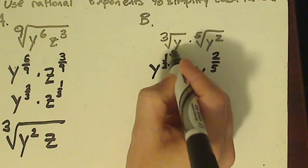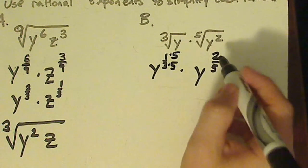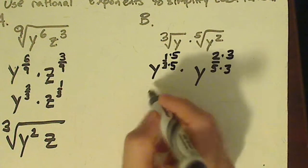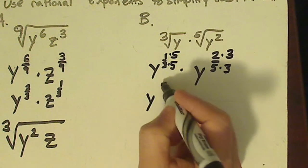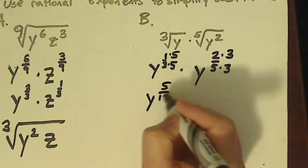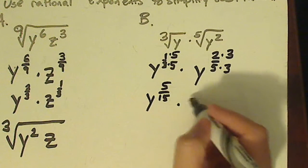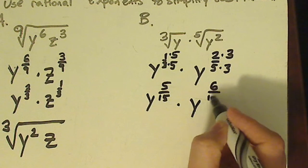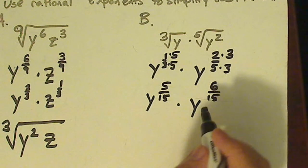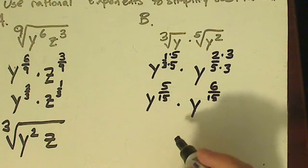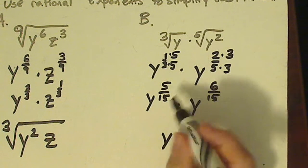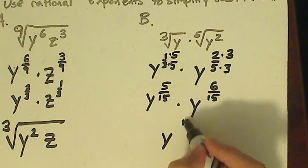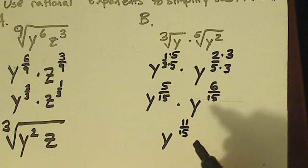So what times three will give me fifteen? Five. Then you multiply the top and the bottom by five. Here, multiply the top and the bottom by three. So you get y raised to the five fifteenths times y raised to the six fifteenths. Then you would add those together. Five fifteenths plus six fifteenths is eleven fifteenths.